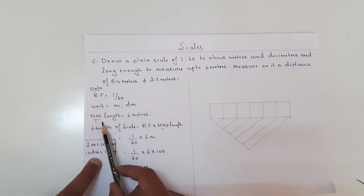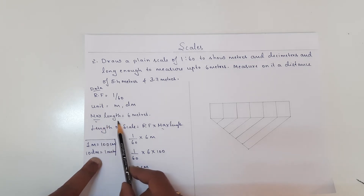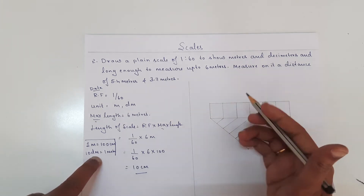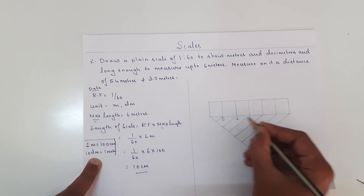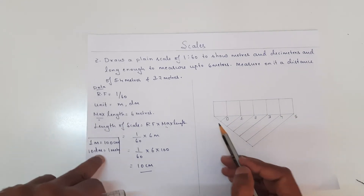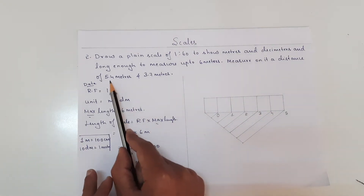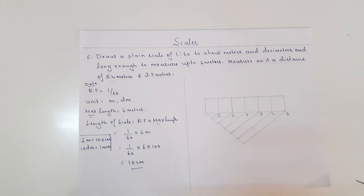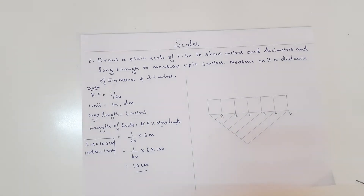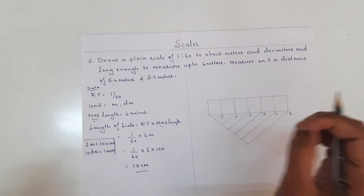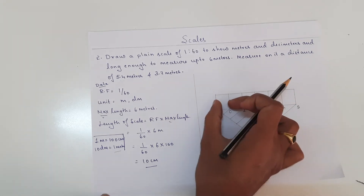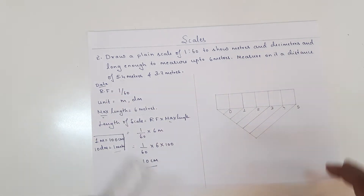The scale can measure a maximum length of 6 meters, with each block representing 1 meter. I am going to give the markings as 0, 1, 2, 3, 4, 5. The section from 0 to the first mark represents decimeters, because we need to represent 5.4 meters and 3.7 meters. I am going to divide that first box into 10 equal parts, since 10 decimeters equals 1 meter.